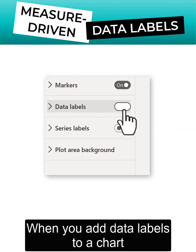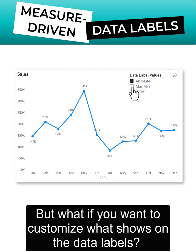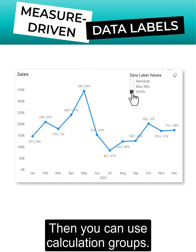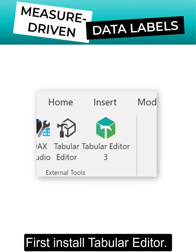When you add data labels to a chart, the values that show correspond to the values of the data series. But what if you want to customize what shows on the data labels? Then you can use calculation groups. First, install Tabular Editor.